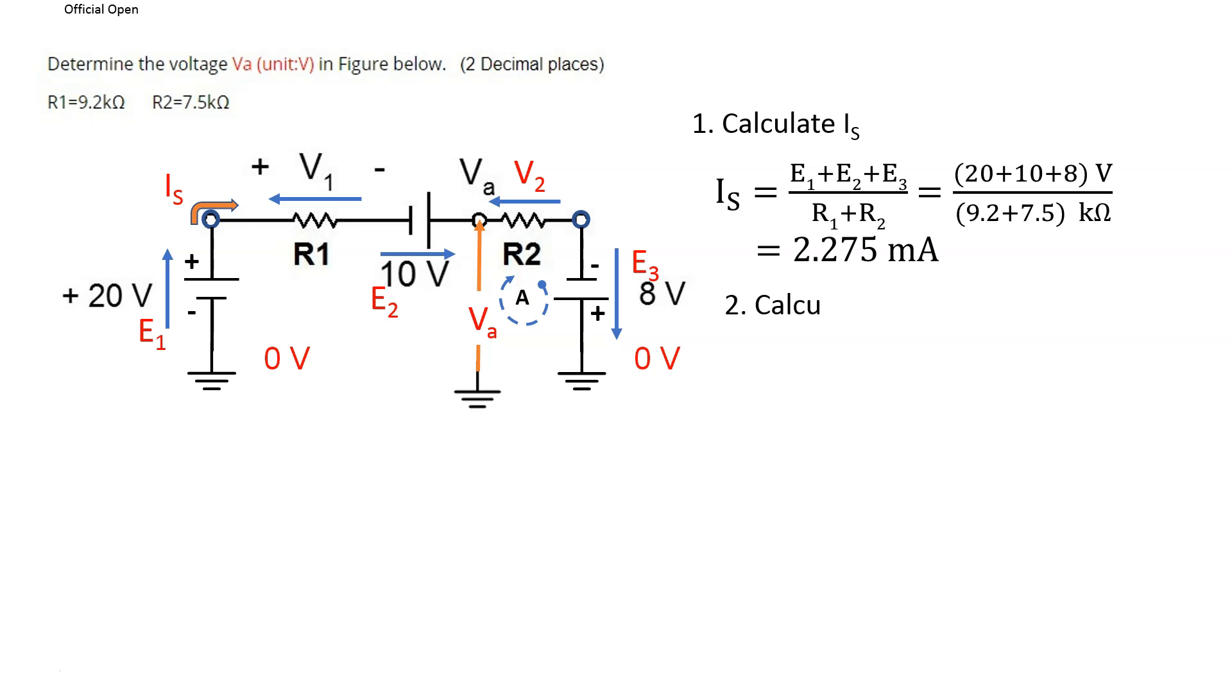Next, we calculate voltage V2 because we need it to calculate VA. So we make use of Ohm's law again. V2 is equal to IS times R2. That gives us a voltage of 17.065 V.